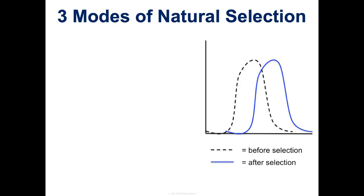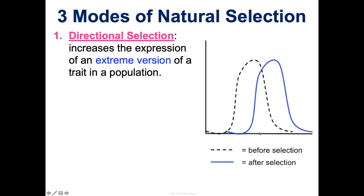Next, I want to talk about three modes of natural selection. When we look at how natural selection changes the frequency distribution of certain traits in an environment, we see three patterns. Directional selection is where the extreme version of a trait is favored over time — one side or the other gets favored — so we start to see the distribution shift to one side on the graph. That's directional selection.